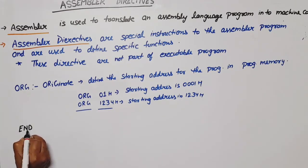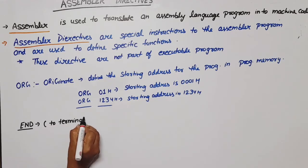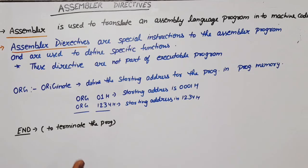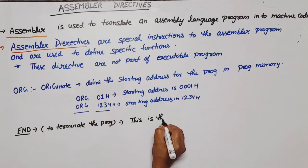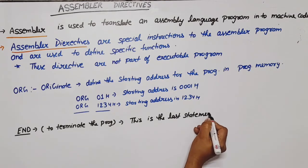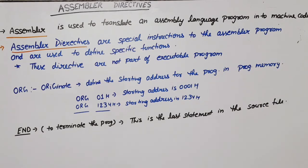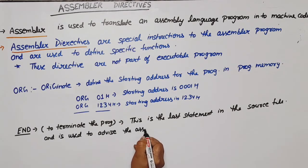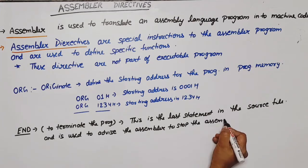Next is END. The main use of END is to terminate the program. If there is a program and a line executes, after the END instruction the microcontroller will ignore all those instructions that follow. END is the last statement in the assembler source file.